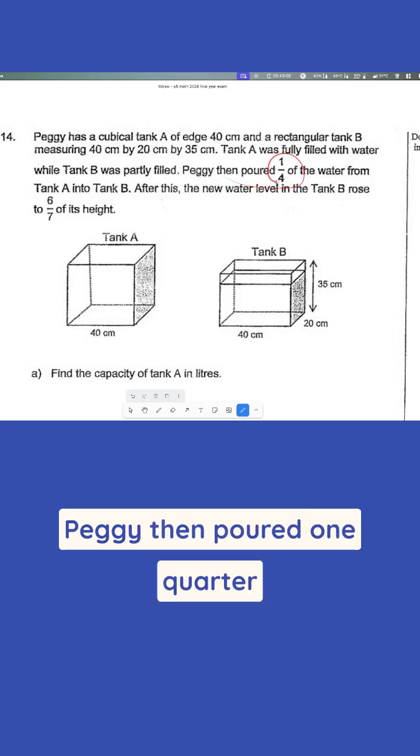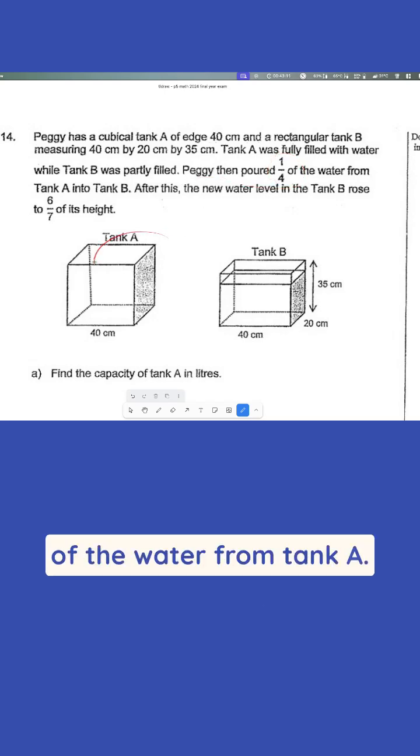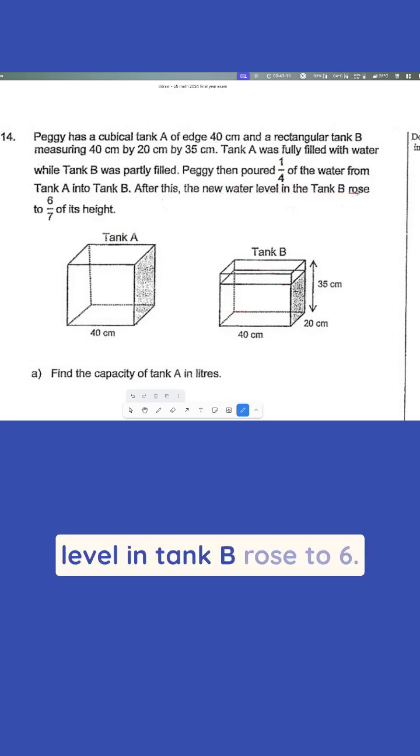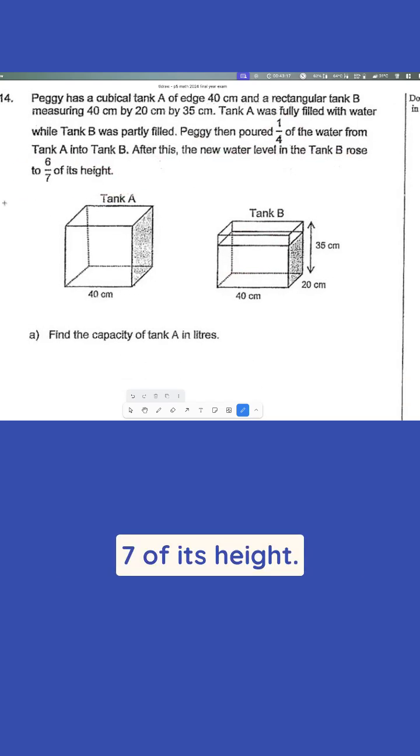Peggy then poured one quarter of the water from tank A into tank B. After this, the new water level in tank B rose to 6/7 of its height.